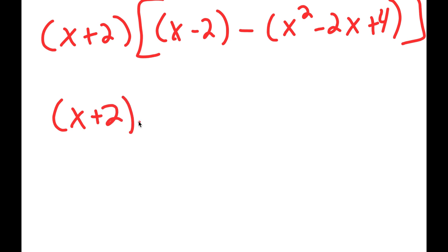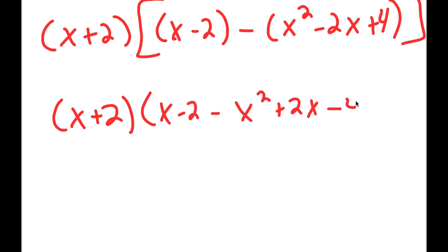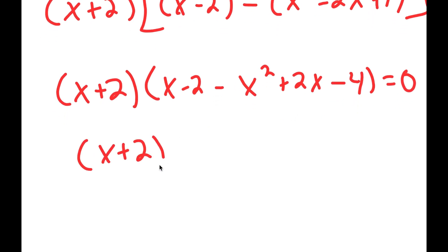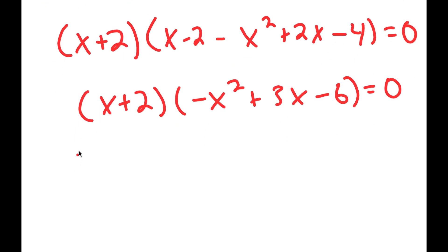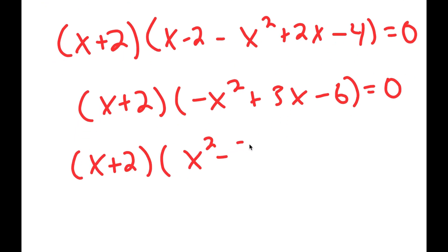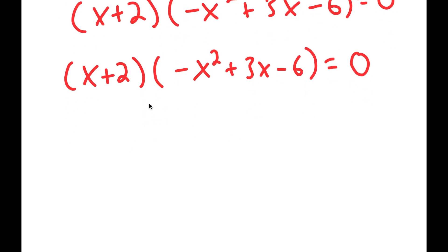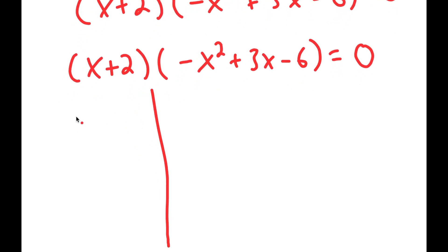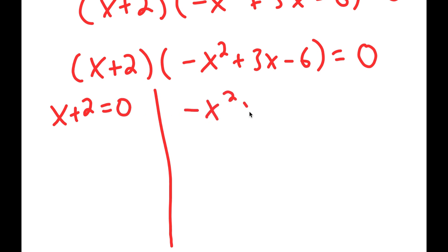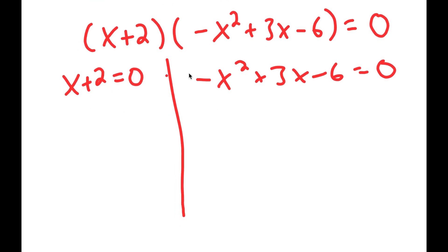This turns into x plus 2 times negative x squared plus 3x minus 6 is equal to zero, which gives two equations: x plus 2 equals zero, and negative x squared plus 3x minus 6 equals zero. For x plus 2 equals zero, I subtract 2 from both sides and get x equals negative 2.